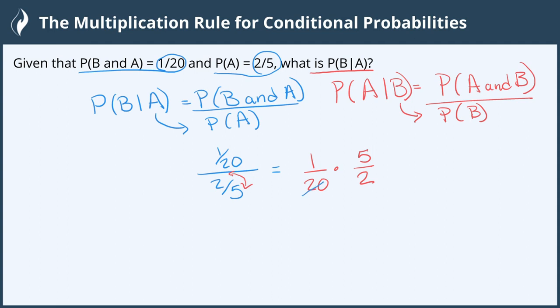We can simplify this before we multiply by dividing both 20 and 5 by 5, giving us 1 and 4. Now multiplying numerator to numerator we get 1, and denominator times denominator gives us 8.